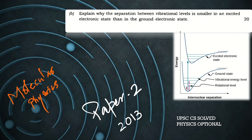Hello everyone. In today's video, we will be looking at a question from the 2013 year, from molecular physics. We have to explain why the separation between the vibrational levels in the excited electronic state is smaller compared to the ground electronic state. In this figure, the spacing in the ground electronic state between vibrational levels is larger than in the excited state.